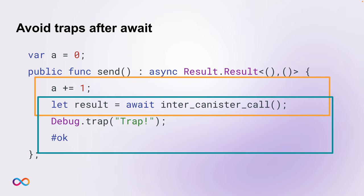If you do await though, the behavior changes. If we trap in the second message — the blue box — the canister state changes up until that point are discarded, because a trap will only revoke changes made since the last commit point. And as we learned, an await is such a commit point. In this concrete example, that means that after trapping, A still holds one. In particular, a non-atomic function that does multiple awaits — a trap will only revoke the changes attempted since the last await, and all preceding effects will have been committed and cannot be undone. State changes from earlier messages, specifically the orange box message, have already been applied as that message executed successfully.